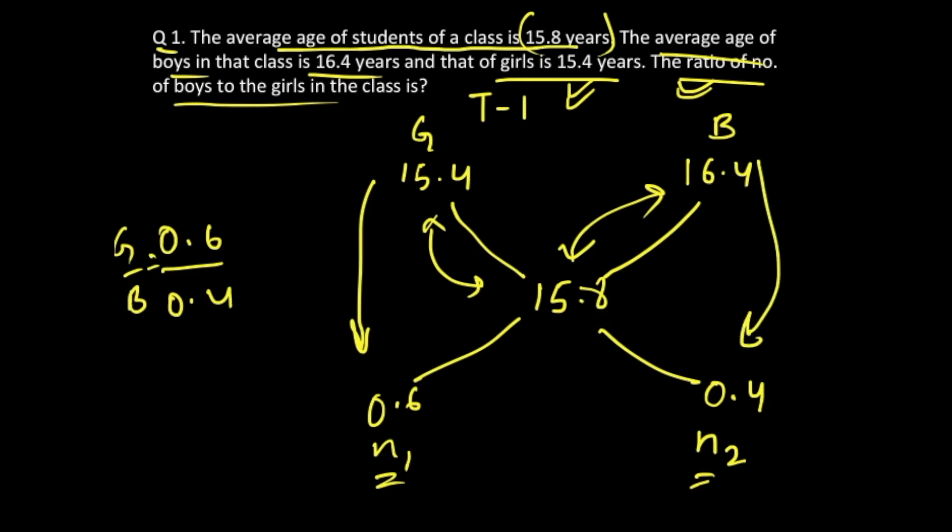If you solve it, this point gets cancelled out, 2 times 3, 2 times 2, so 3 upon 2 is the ratio of girls to boys. But the question is asking about the ratio of boys to girls, so you will write 2 upon 3. So 2 is to 3 is the ratio and that becomes your answer.